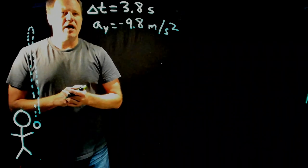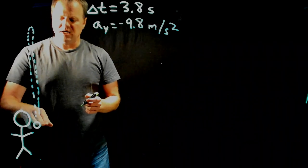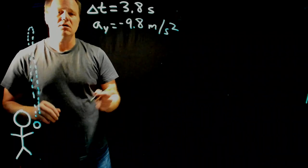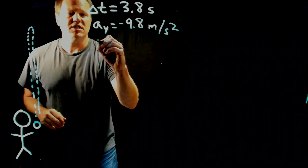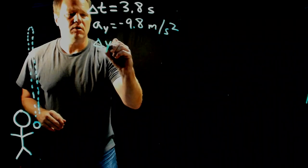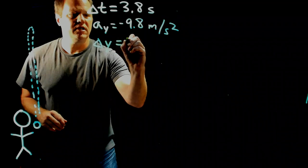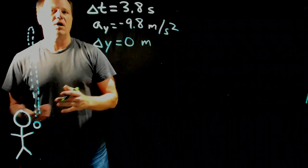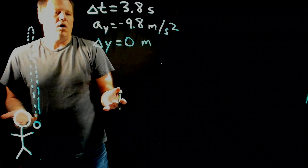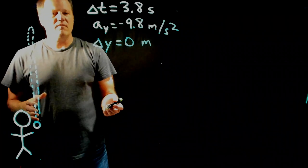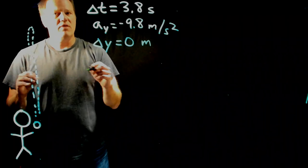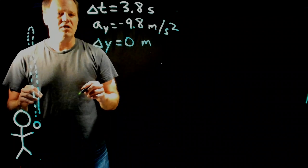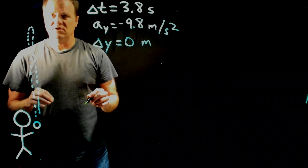The second bit of implicit information is that because the ball starts and ends at the same location, the displacement is actually zero. This is a little counterintuitive, because it seems to imply the ball didn't do anything at all. But displacement just compares the initial to the final position — it doesn't tell you about distance traveled.